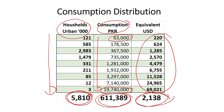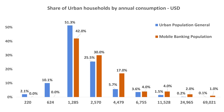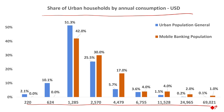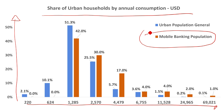As a founder working in fintech and financial services, is there a way to get more specific? In this third cut of the same dataset, we're still looking at share of urban households by annual consumption, but now we're comparing the general urban household population to the population that actively uses mobile banking applications on their smartphones to do financial and banking transactions.